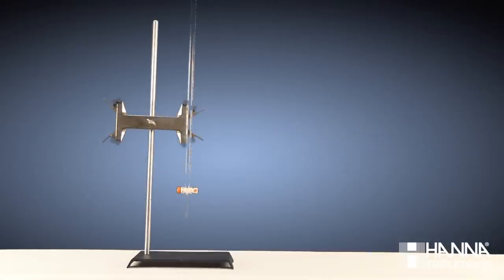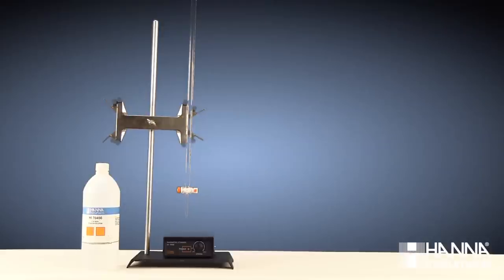To perform a manual titration, we'll need the following equipment: a burette and ring stand, our titrant, which today is HI7046, 0.1 normal sodium hydroxide, a stirrer and stir bar, such as our HI190M.